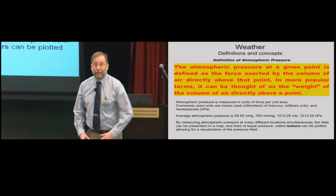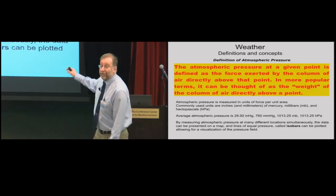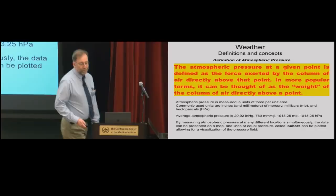We can measure atmospheric pressure in many locations, and that tells us something about differences in the flow and helps us define the atmosphere. When we present that data on a map and connect the dots — drawing lines of equal pressure called isobars — we get a visualization of the pressure field. This allows us to find different features that help us determine where weather systems are.